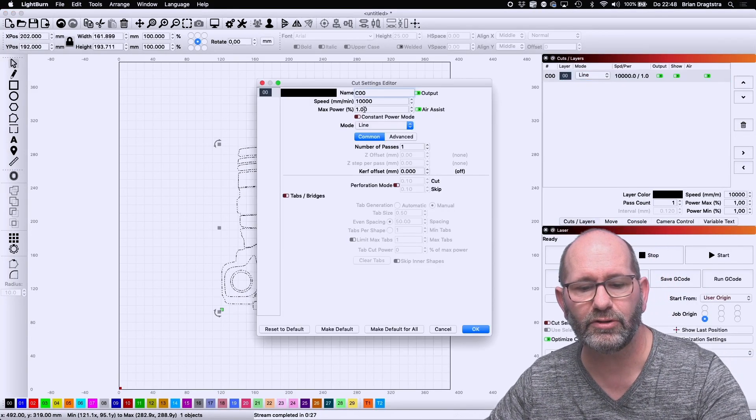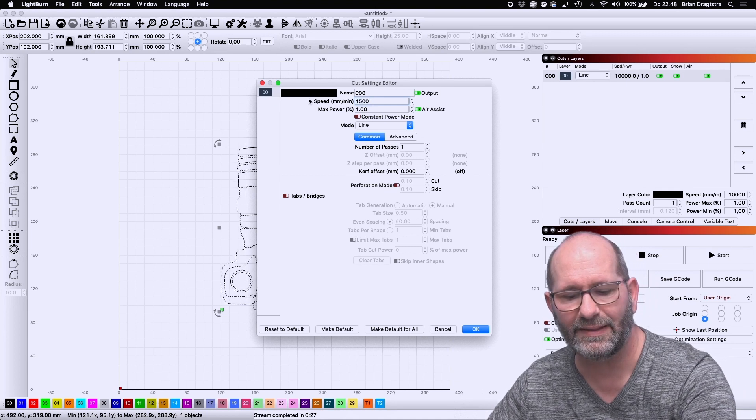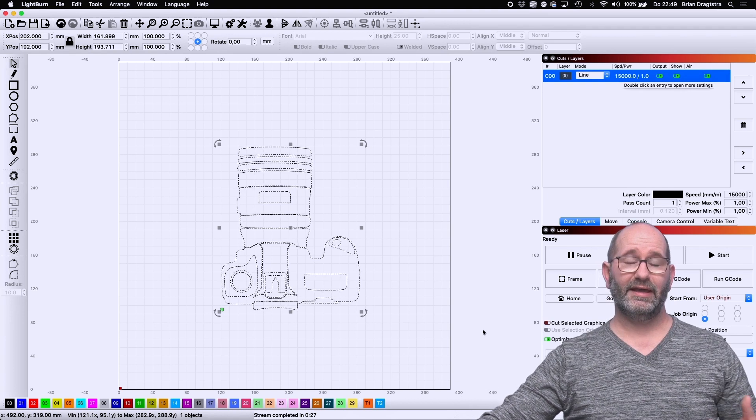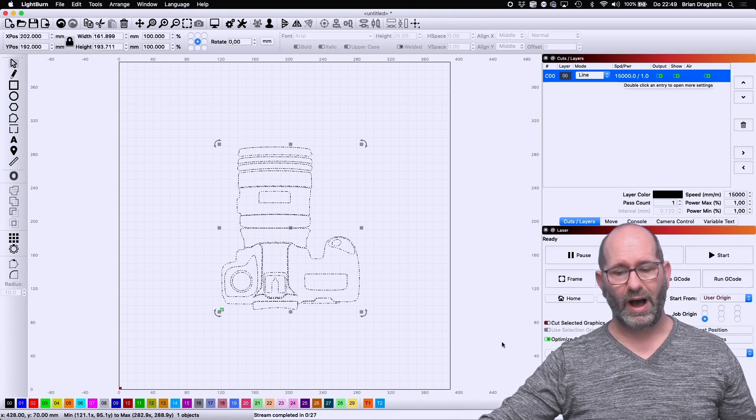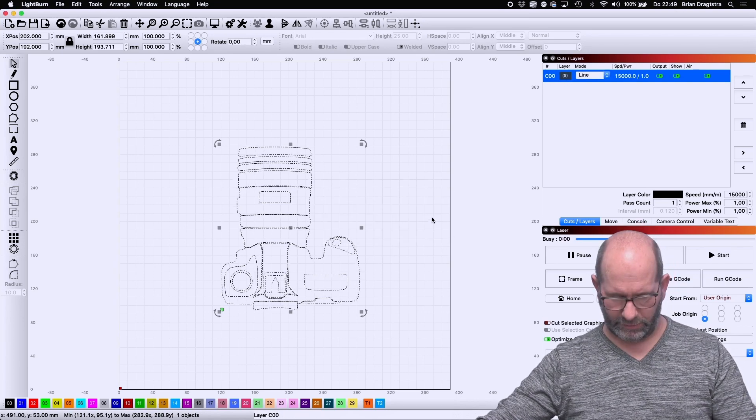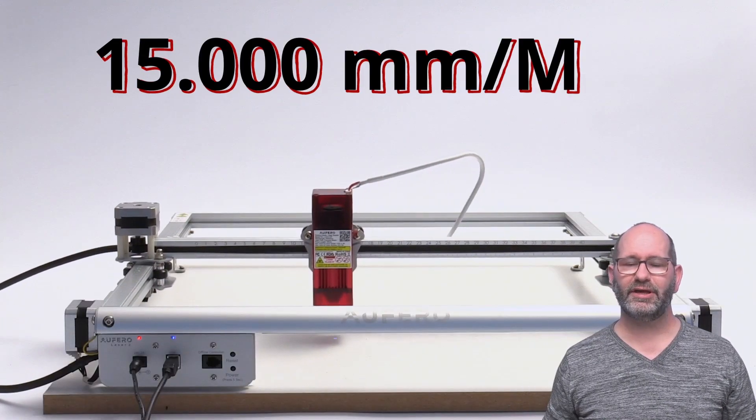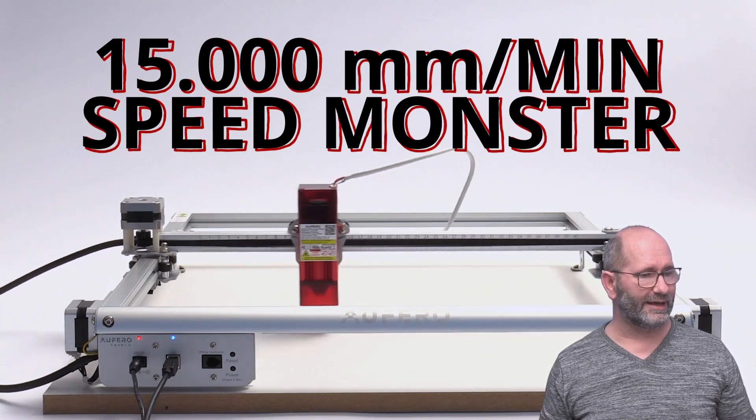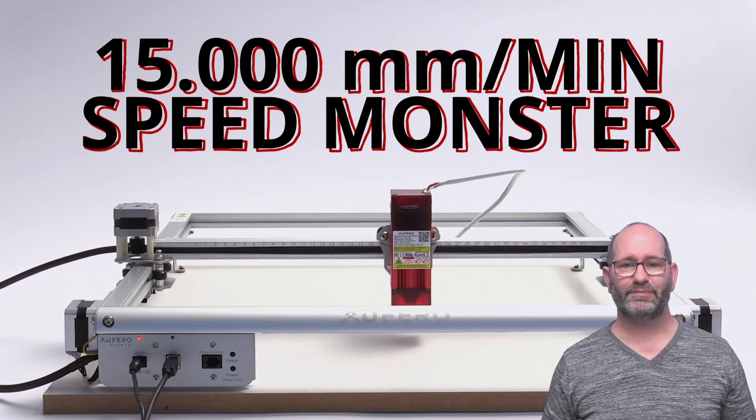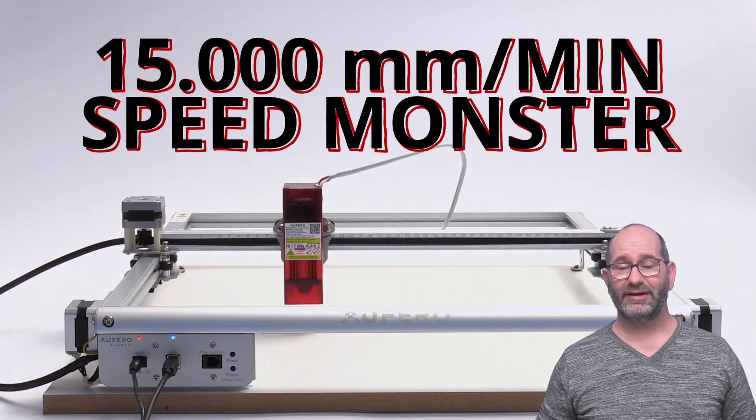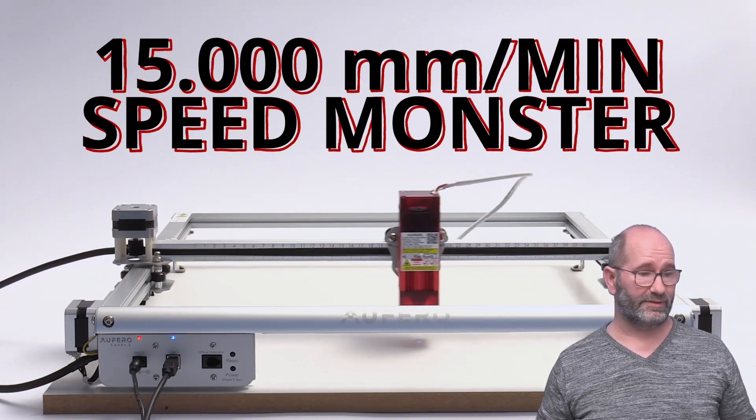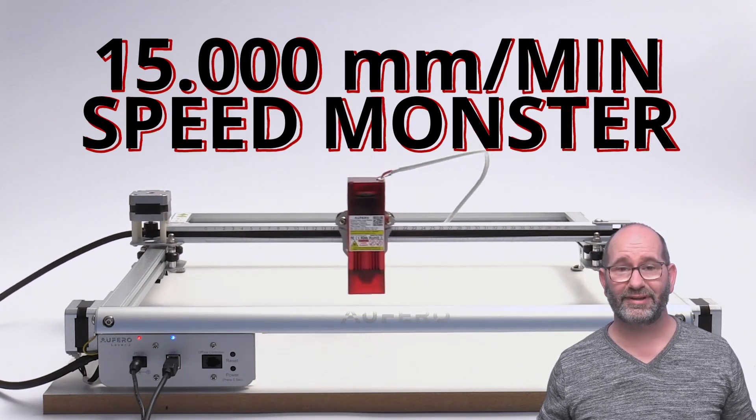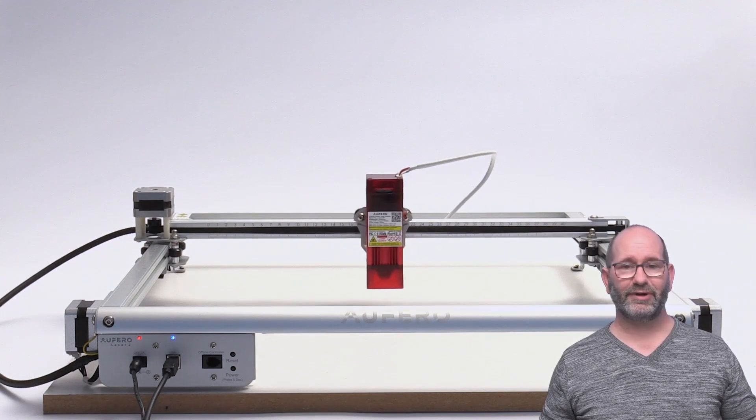This machine should be capable of running at 15,000 mm per minute. And if so, wow, well, we are going to take a look at the machine running at this incredible speed. It is now running at 15,000 mm per minute, and yes, it works. And I've tried with some accuracy tests, and it is really accurate as well. So, this is incredible.